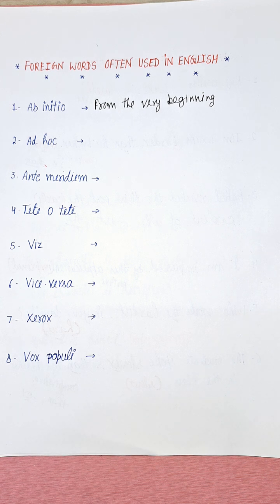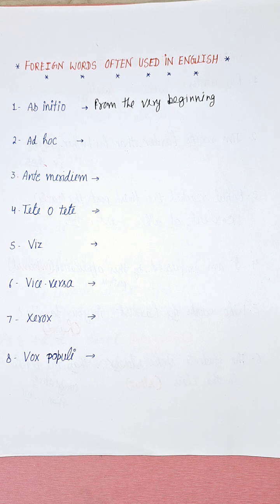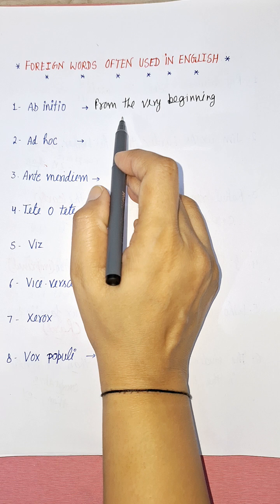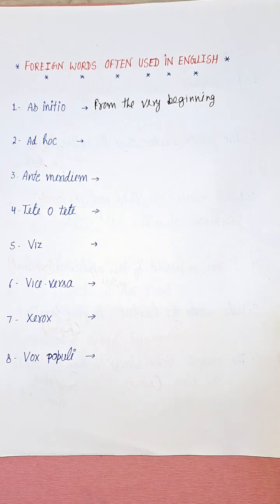We'll discuss the meaning and how you can use these foreign words in English. For example: 'He was instructing an ab initio pilot' — meaning he was instructing a pilot from the very beginning. Another example: 'To get good marks in English language, we should work hard ab initio' — meaning we should work hard from the very beginning. Using ab initio makes your English more impressive.